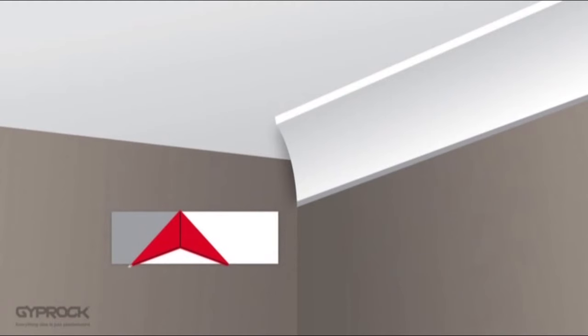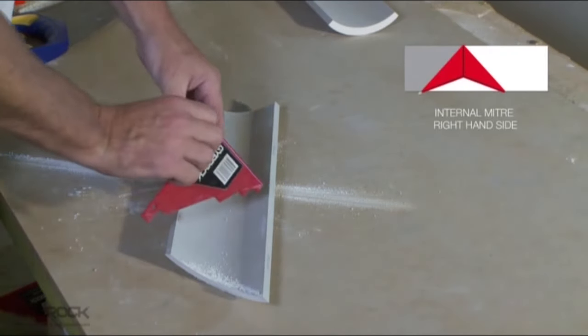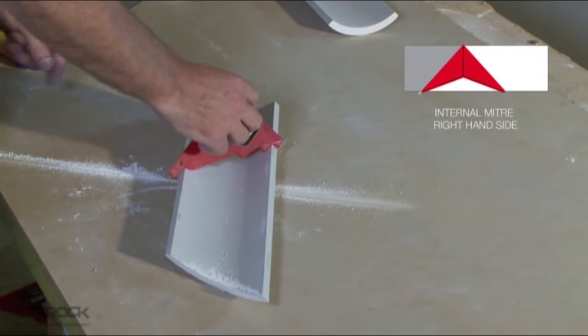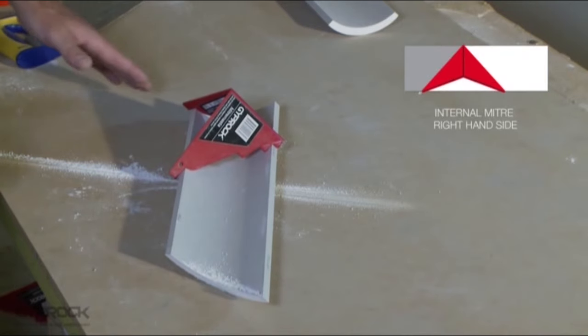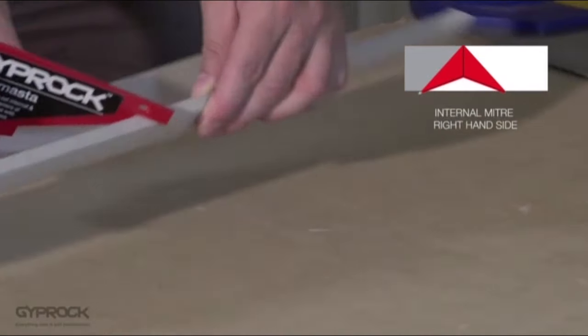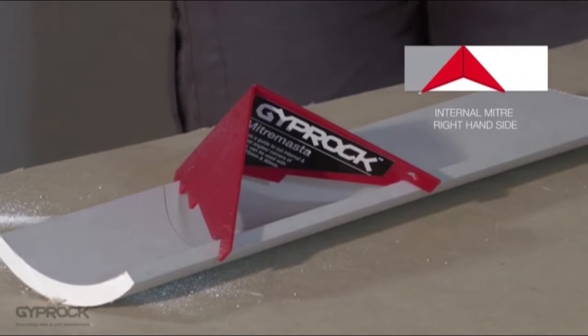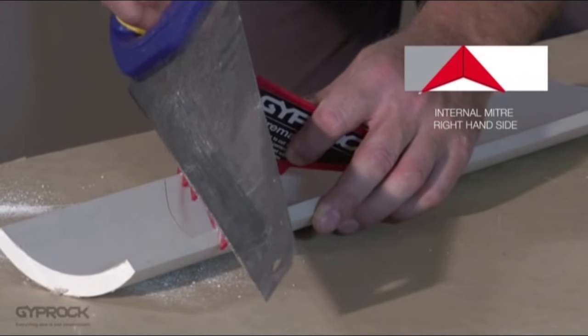Again with the apex of the mitre master on the ceiling edge we will be cutting the waste away from the left of the apex so that the ceiling edge is shorter. You may find it less awkward to cut from the other side of the cornice which is okay as long as the apex is on the ceiling edge and you are cutting along the correct side of the mitre master.